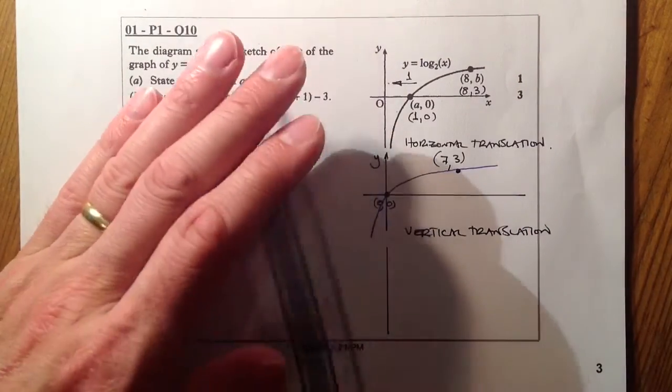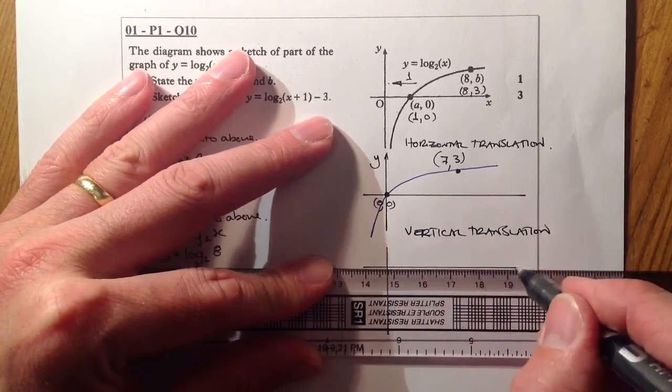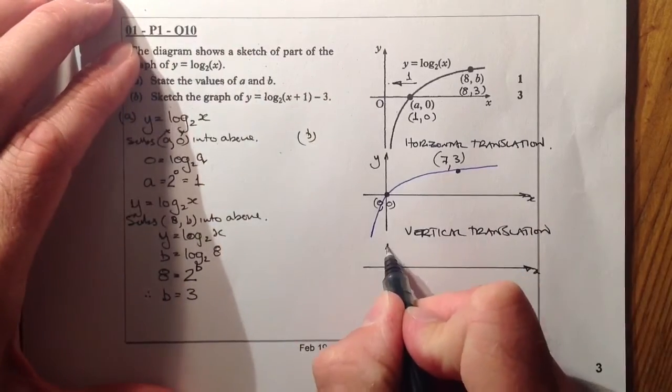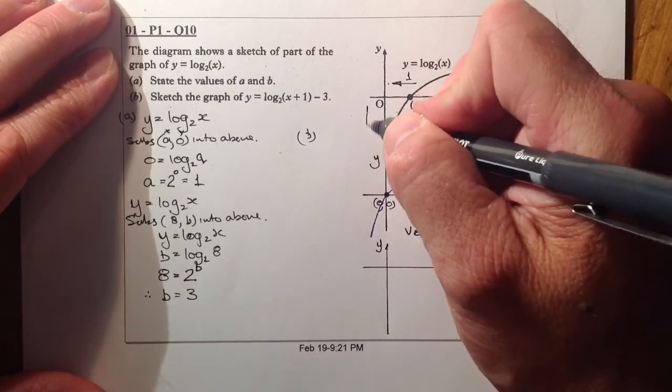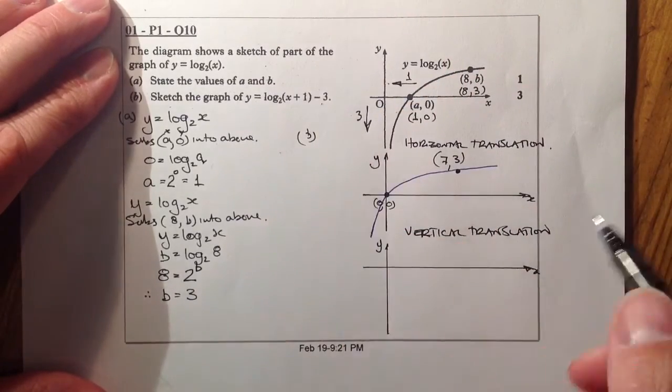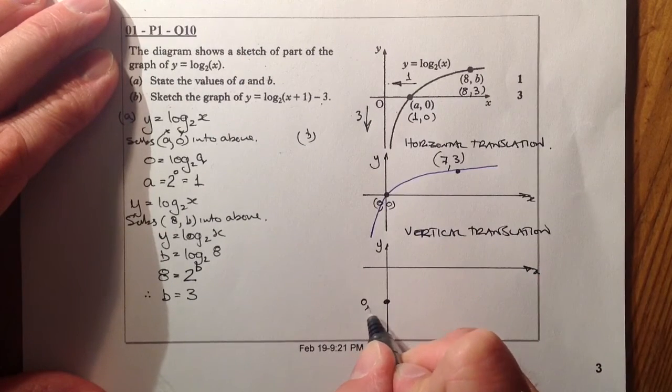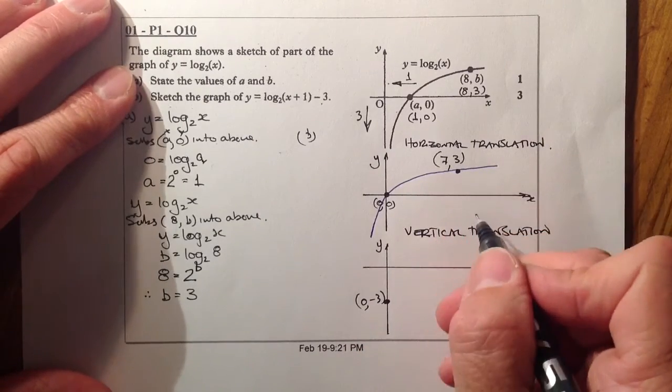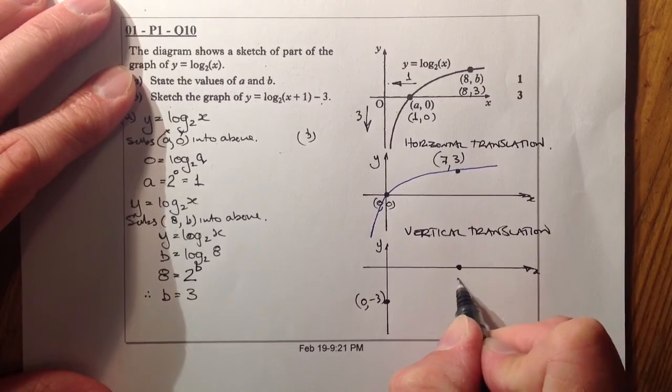So finally, this should give us our final answer. What I'm going to do is I'm going to be going down the way 3 places based on that value. So going down 3 places, that'll take me down to there. So that point there is 0 minus 3. And the 7, 3 point will go from 7, 3 down to 7, 0.